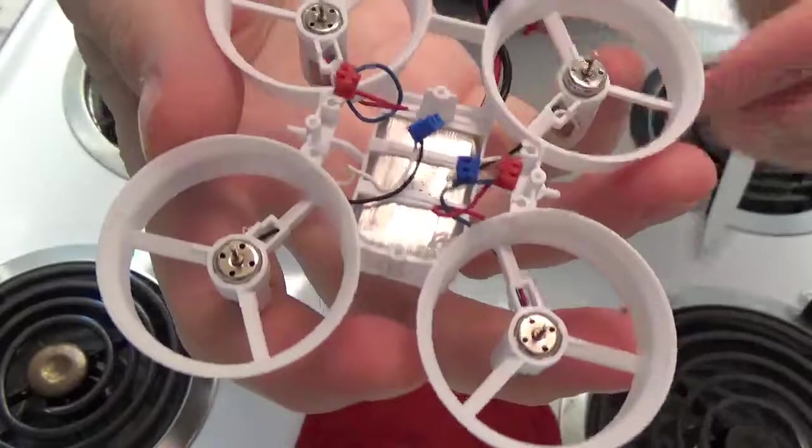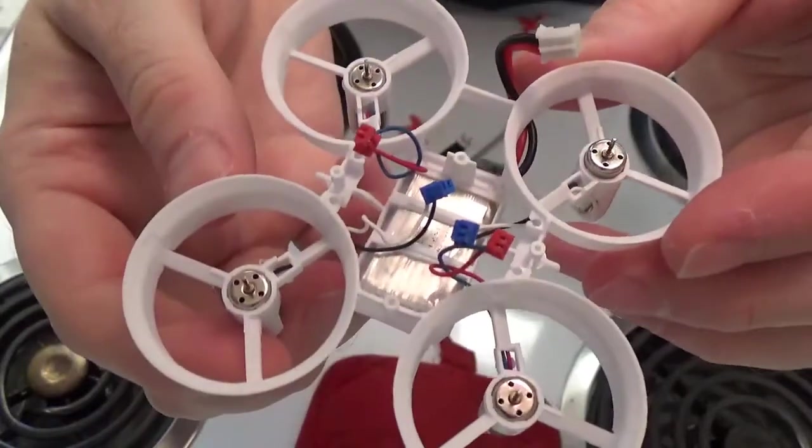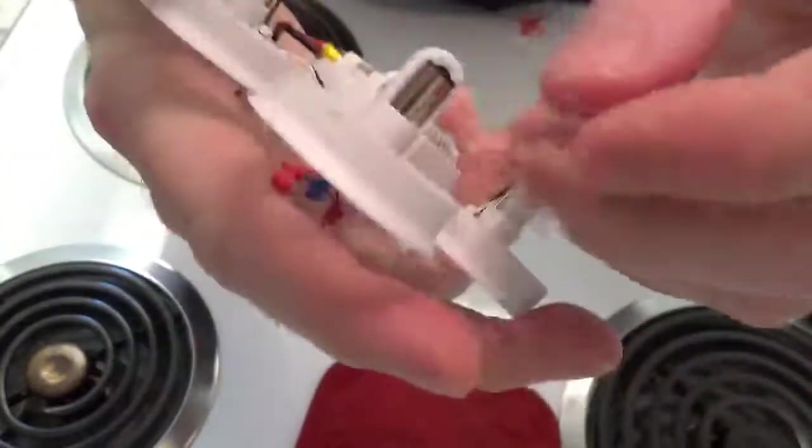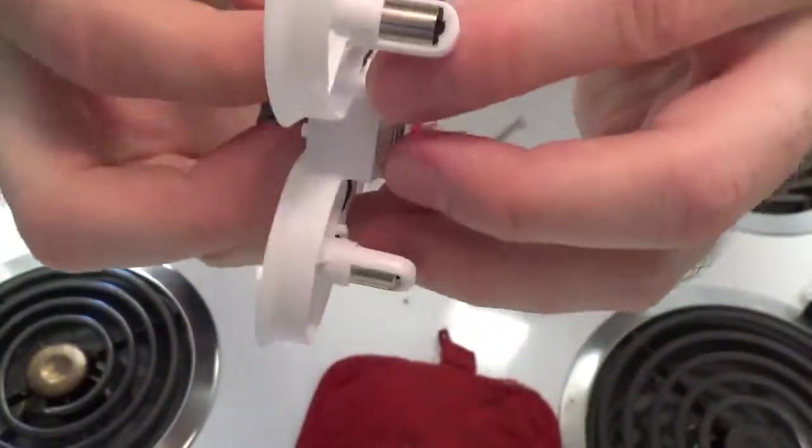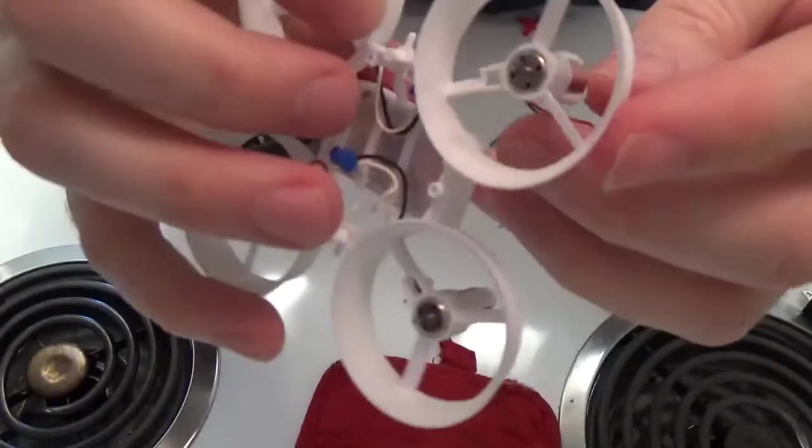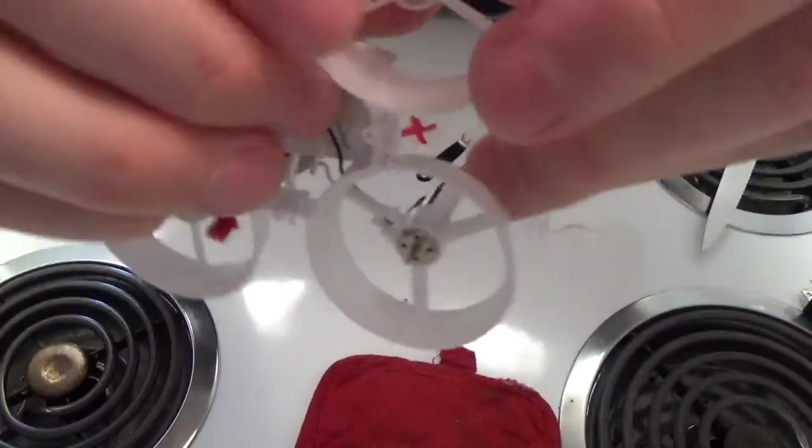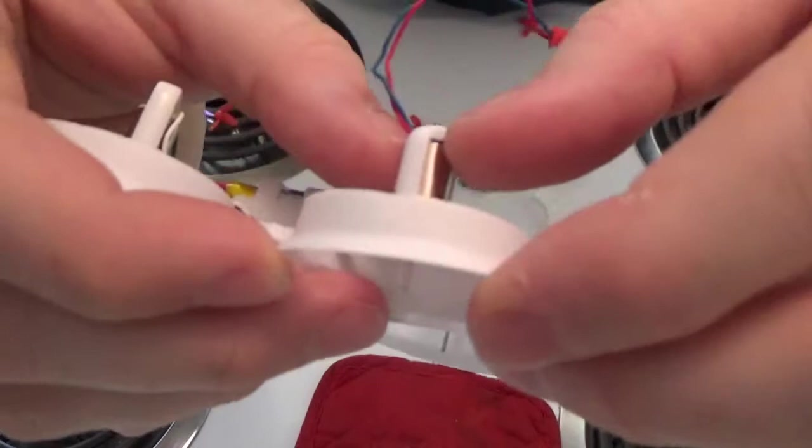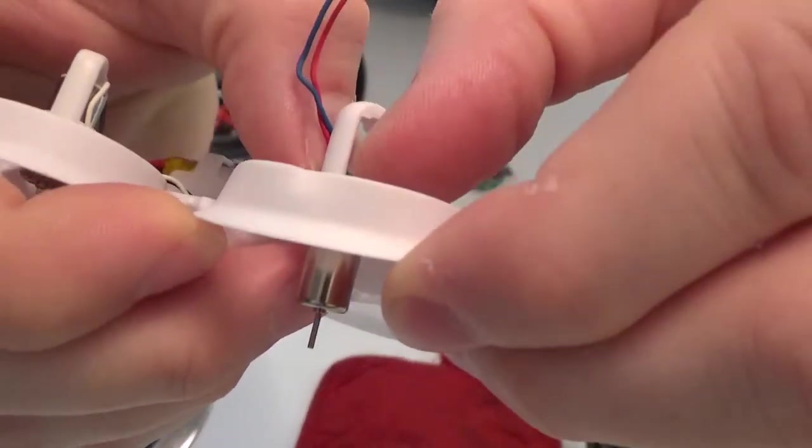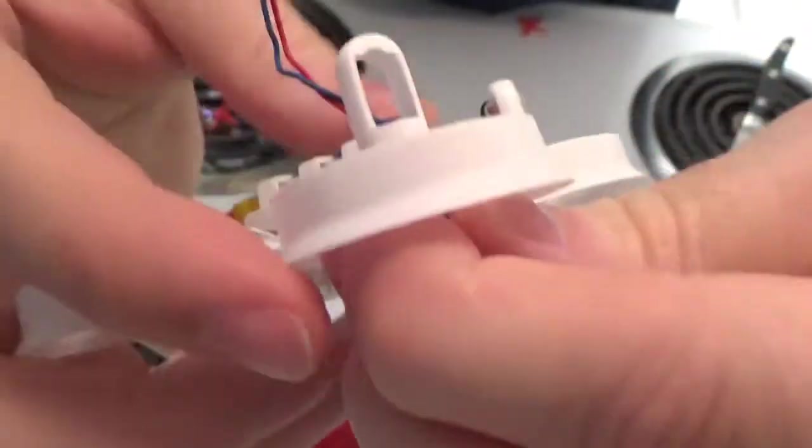So now we have our motors laid bare without the props. You just basically feed these little wire dogs out of here. Just use your fingernails on the bottom of the motor, give a little push, and there you go.